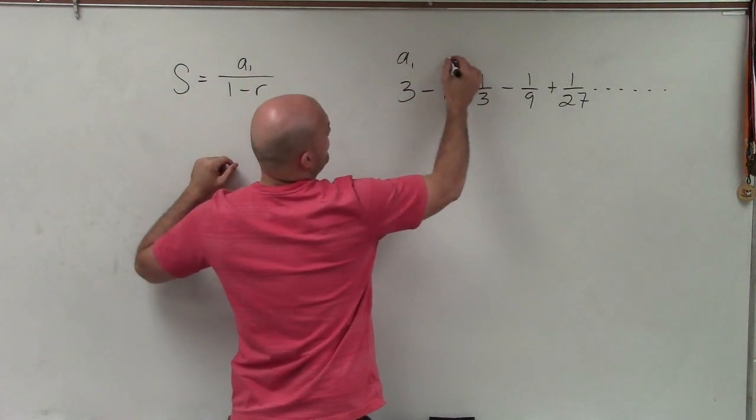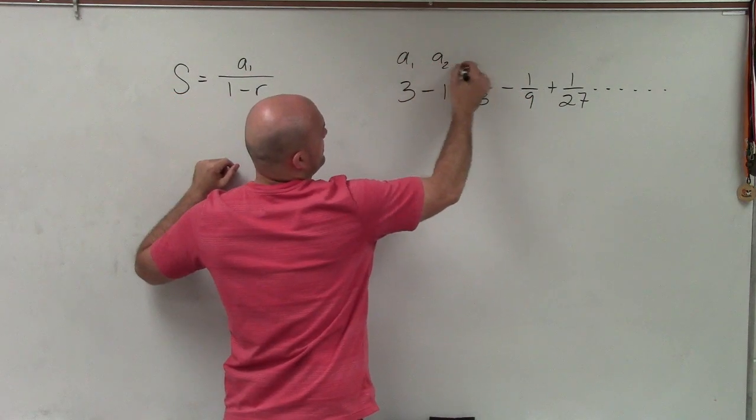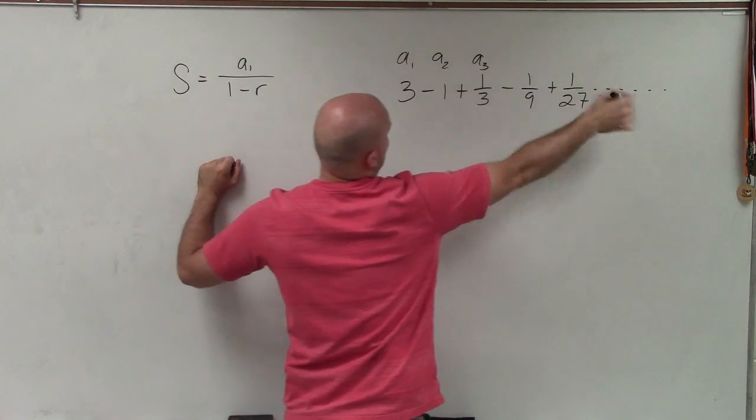So just by labeling this geometric sequence, we can have that as a sub 1, a sub 2, a sub 3, dot dot dot, right?